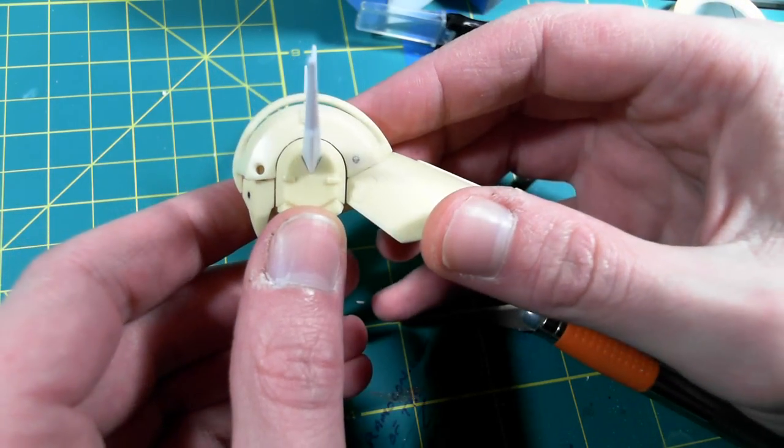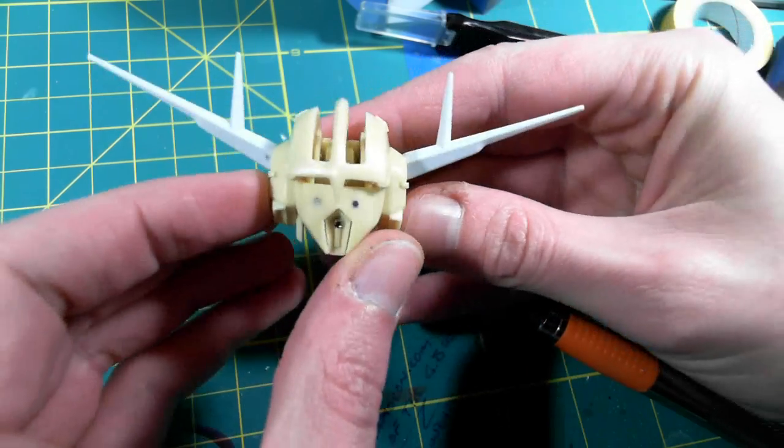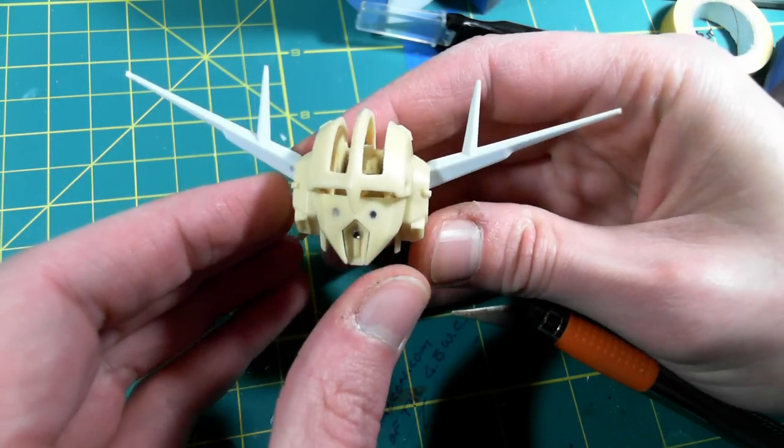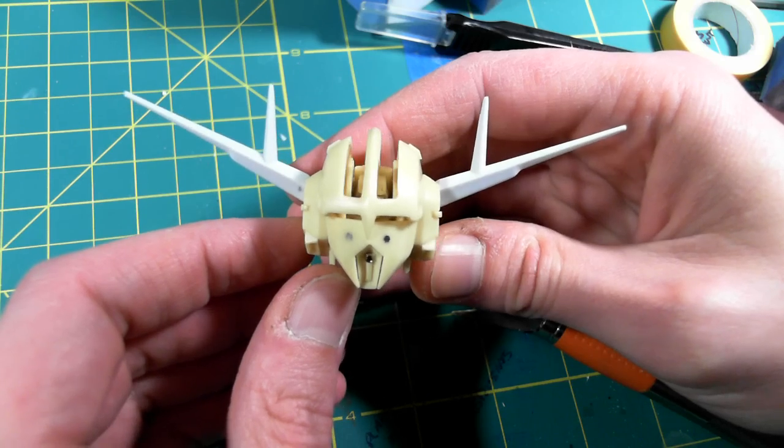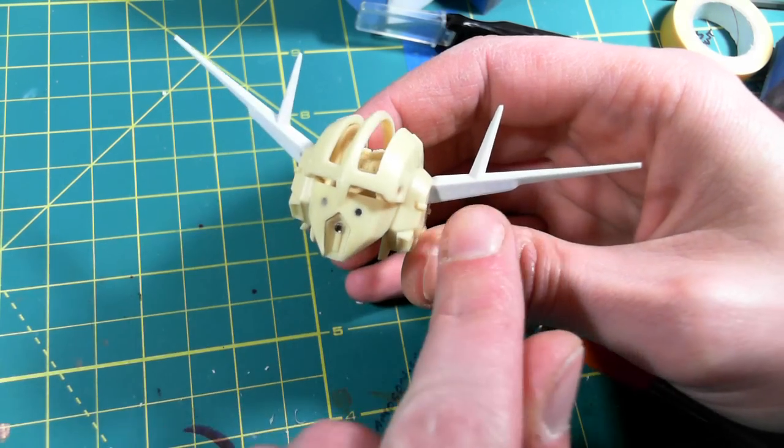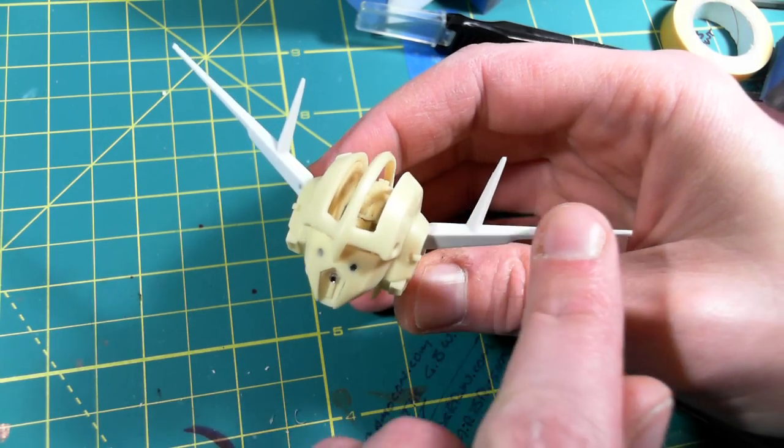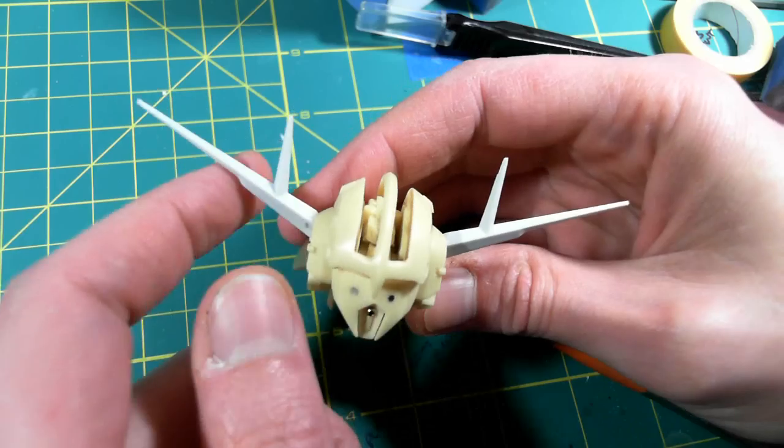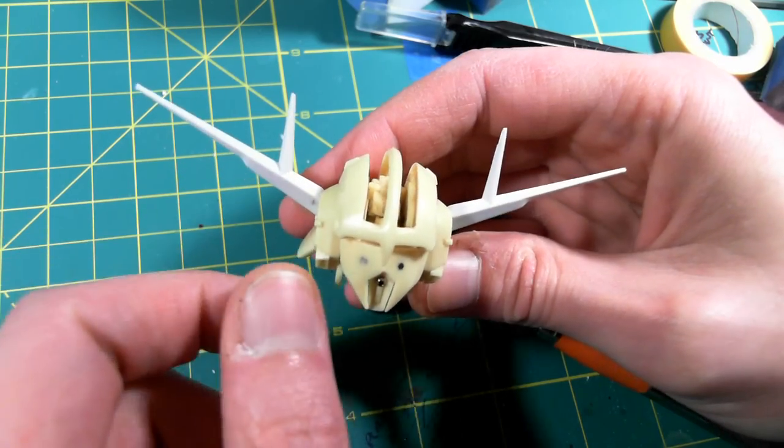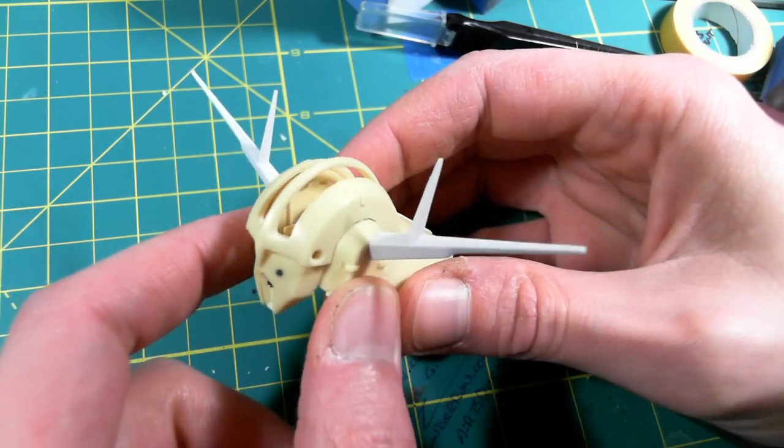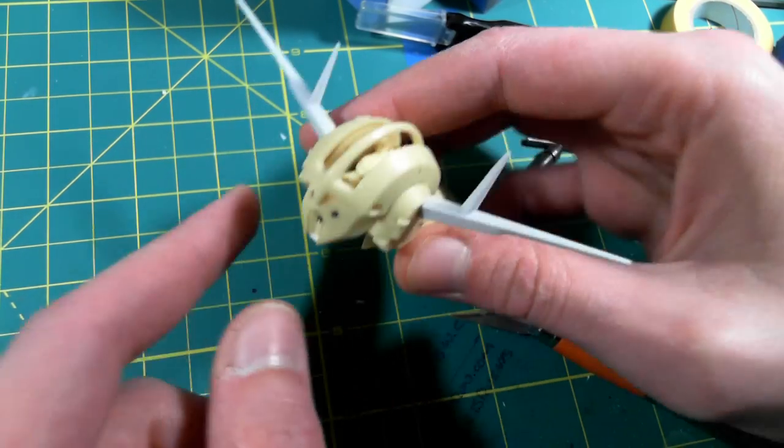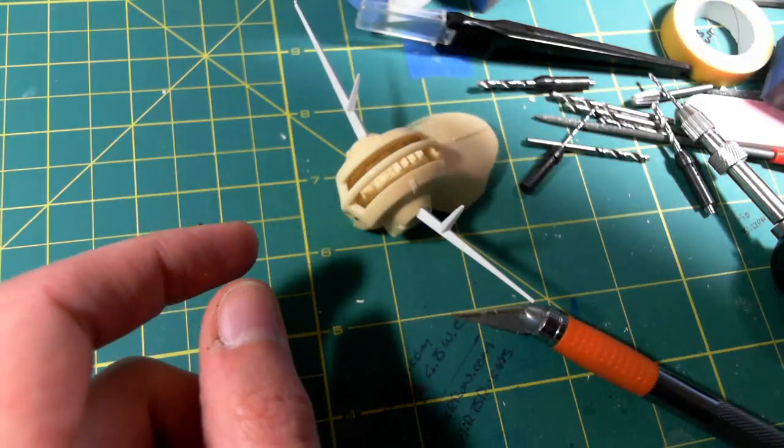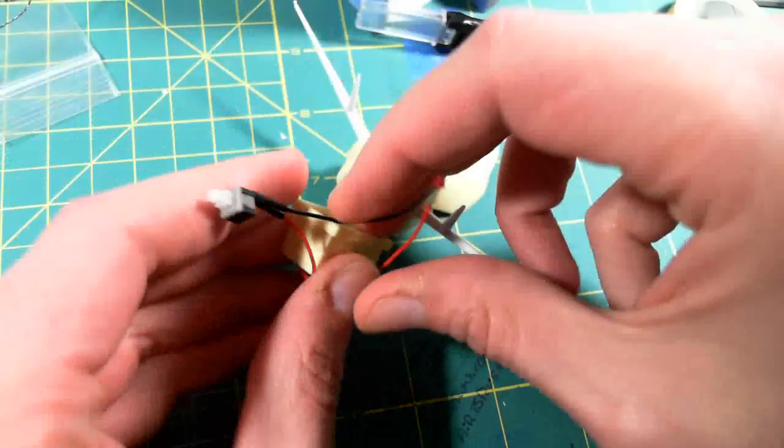So focus on it, the 1/100 scale Zeong conversion head. It's all done and ready for primer. I'm going to true up these a little bit because there's a couple little dimples in here with the plastic, but I will probably prime this tomorrow after work.